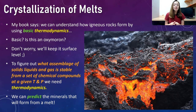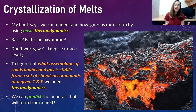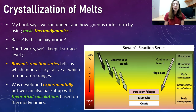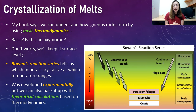The reason thermodynamics is really useful in igneous petrology is because it helps us figure out what assemblage of solids, liquids, and gases are stable from a set of chemical compounds at a given temperature and pressure. We want to be able to predict the minerals that will form from a certain melt. You've probably heard of Bowen's Reaction Series, which tells us which minerals crystallize at which temperature ranges — however, this was determined experimentally rather than by thermodynamic calculations.